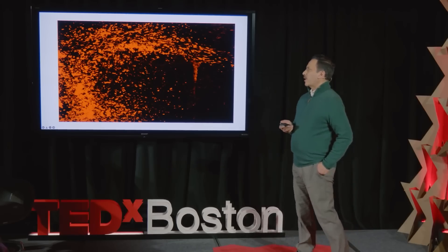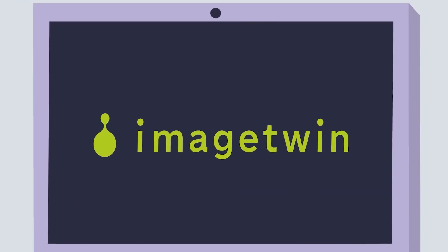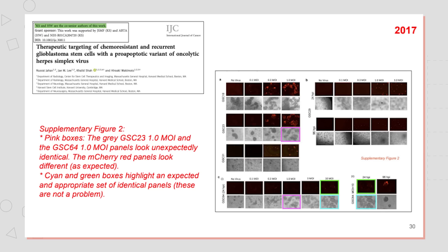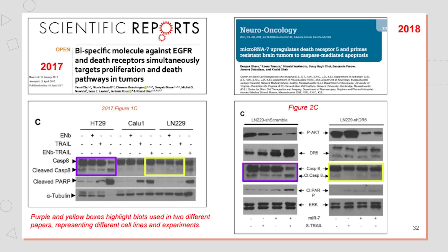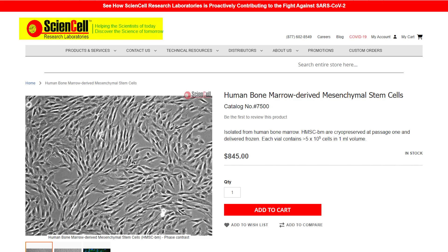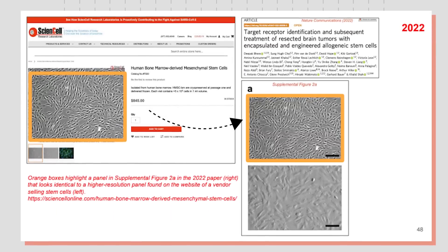And this is what happened to Khalid Shah. Through the use of software — in this case ImageTwin — Elizabeth Bick was able to find many instances of duplicated images taken from completely different papers by different research teams that didn't involve the original authors. She even found evidence of the authors taking images from websites that sell scientific equipment and materials and using them as evidence in the actual paper itself.